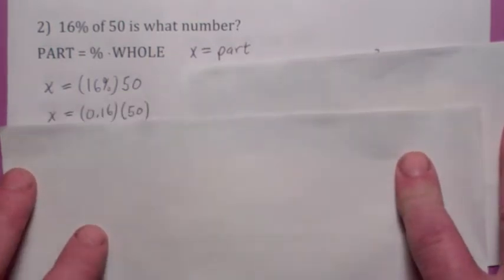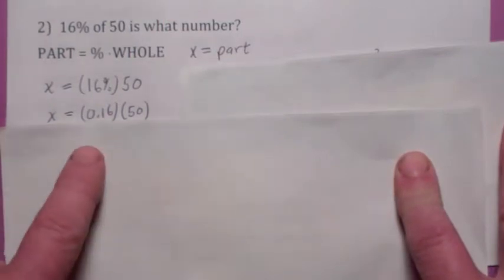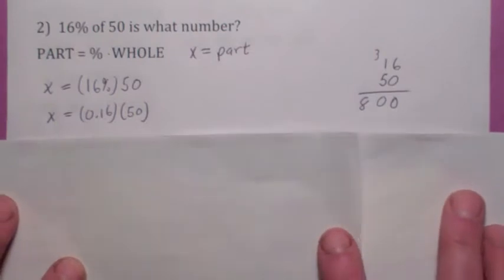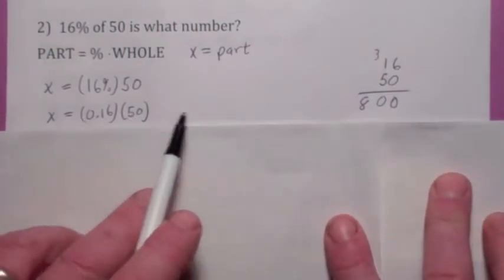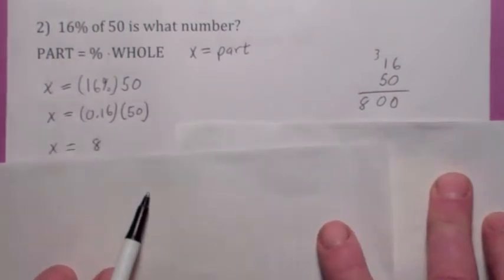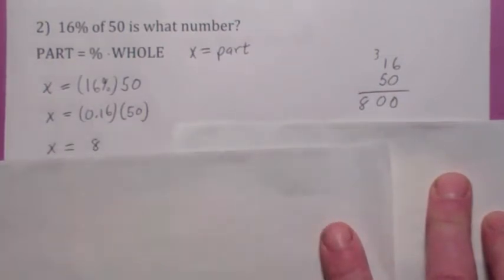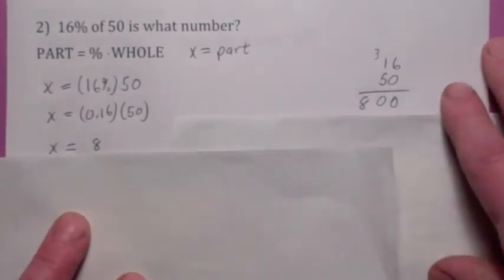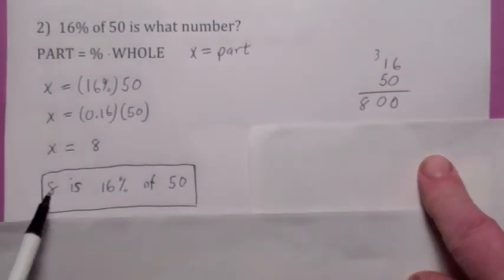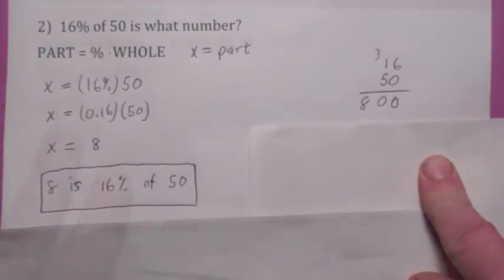Now, to finish it, change to a decimal. Move the decimal place over two places to the left. And then, from what we talked about earlier, multiplying decimals, you can think of this as multiplying 16 times 50 and getting 800, but then don't forget to move the decimal place back over two places. So the 800 becomes 8. So the answer is 8 is 16% of 50. The part is the percentage of the whole. They all kind of work that way.